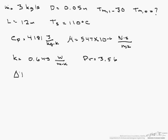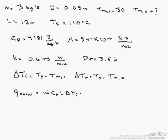So we are going to let delta Ti equal Ts minus Tmi, and our delta T out is going to be Ts minus Tm out. Now our heat transfer is through convection, which is M Cp (delta Ti minus delta To).